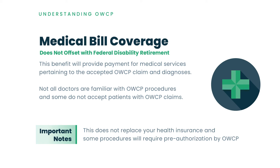The second major workers' comp benefit is medical bill coverage. The OWCP pays for your medical treatment pertaining to your accepted diagnosed conditions. A lot of doctors are not very familiar with this, so sometimes it might be hard to get your doctor on board. The billing is a little different than typical insurance, so it might be a good idea to find a doctor who is familiar with federal employee workers' compensation. It does not replace your health insurance, but it is covered for the life of the injury.